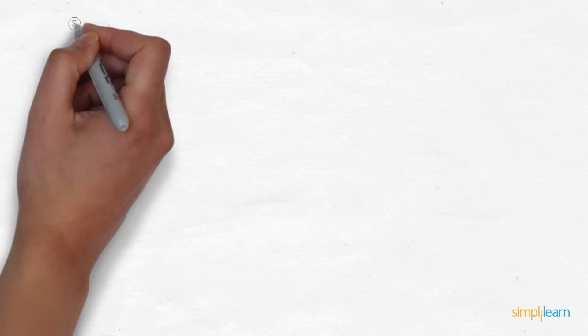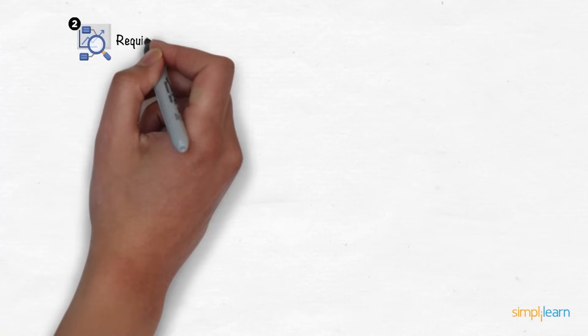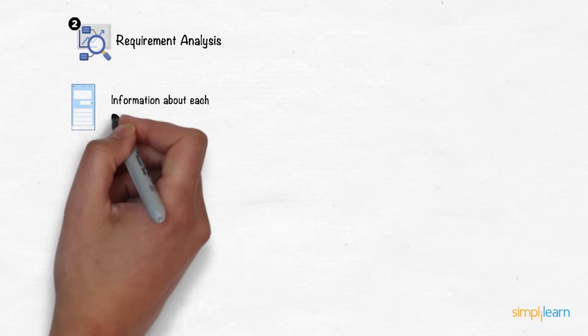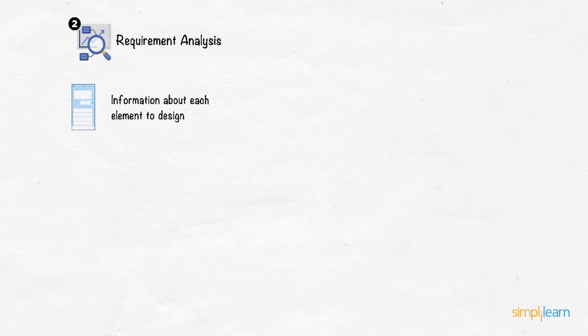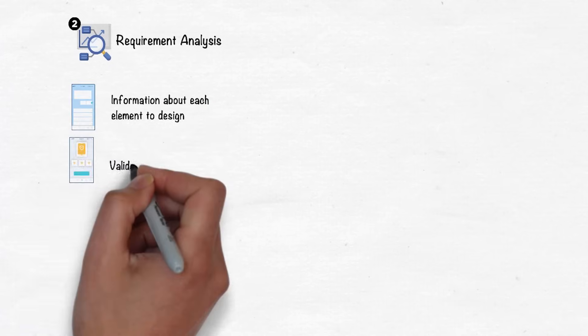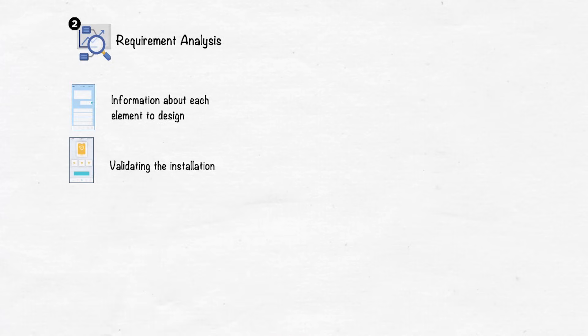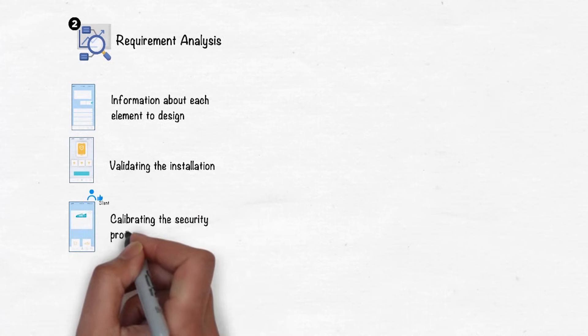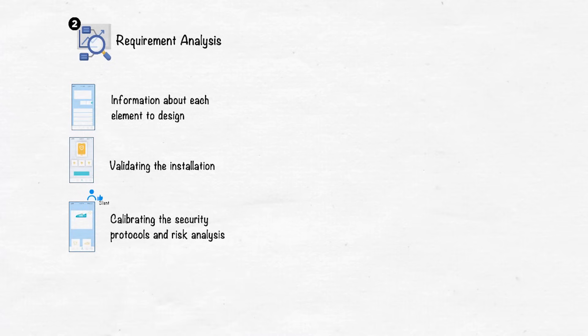The development moves on to the second stage, the requirement analysis phase, which includes detailed information about each element to design the software, validating the installation of elements in the application according to the client's requirements, calibrating the security protocols, and performing risk analysis for the software application.